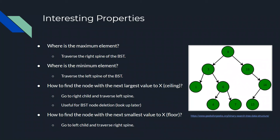This can be useful for several things, including node deletion in a binary search tree. Similarly, to find the next smallest value to X with X being in the tree, you find X, go to the left child, and traverse the right spine. Those are just some interesting properties about binary search trees — there are many more, but these might help.